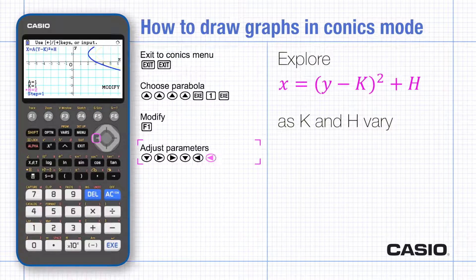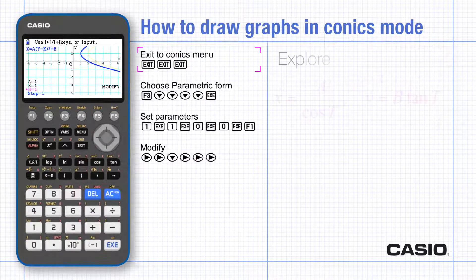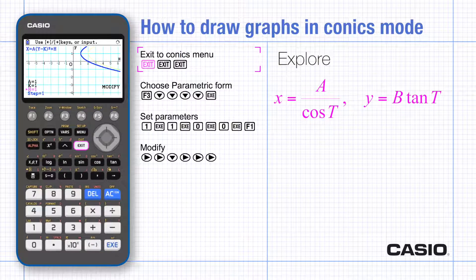Notice the values of h and k determine the position of the vertex of the parabola. Sometimes the equation of the conic graph is given parametrically.